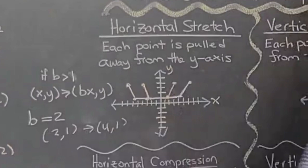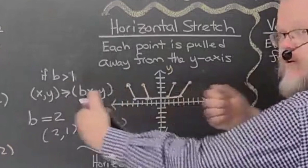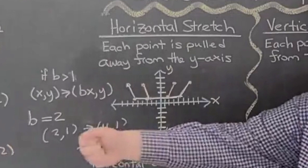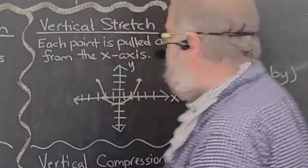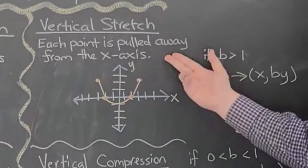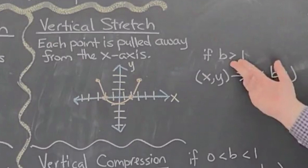Looking at the final graph, it got stretched horizontally — pulled away from the y-axis — by multiplying the x value by a number bigger than one. Now let's look at vertical stretching: each point is pulled away from the x-axis, and B must again be bigger than one. This time you multiply the y value, not the x value. Let B equal two.